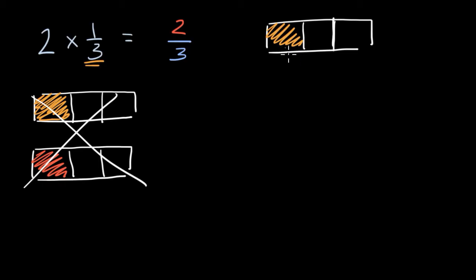So that's one of them. That would be one times one-third. And then two times one-third would be one more of those. So in total, how much do we have? I filled in two of the three equal sections here. So that is two-thirds.